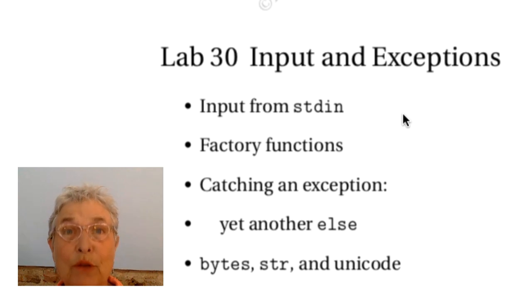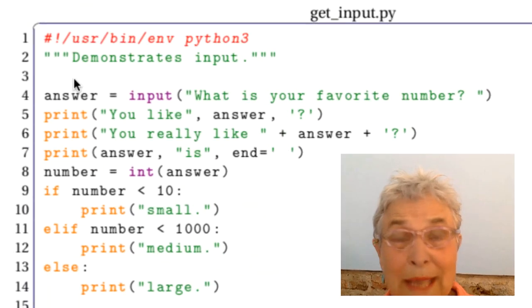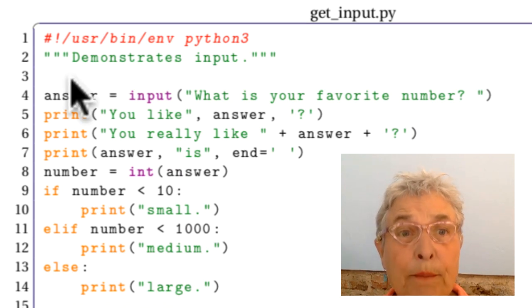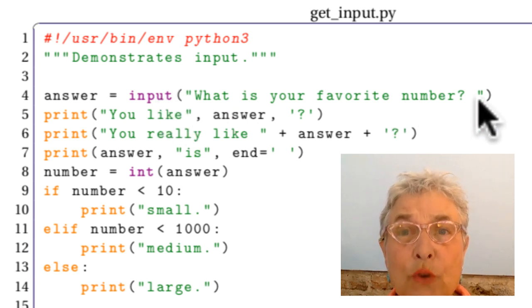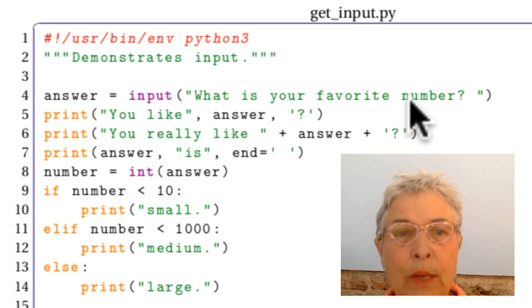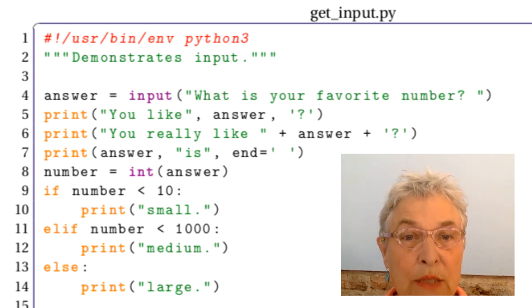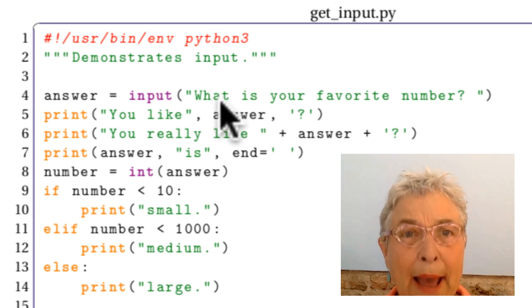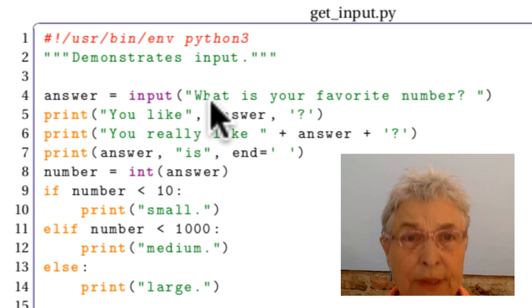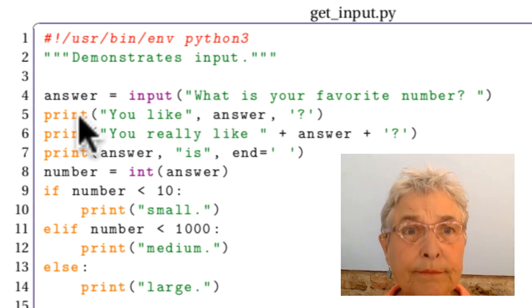First, we'll be taking input from standard in from our user. Take a look at getInput.py and you'll see that there is input, a built-in function. It does a huge job for you. You give it the argument of a string and that string is going to pop out on standard output. Down here where we run it, we see what is your favorite number. That's from input. And then it waits there. It waits for your user to type something, anything, any amount of stuff. But when your user presses the enter key, getInput comes back with the string that was given. Then we have the string eight. The answer equals eight.